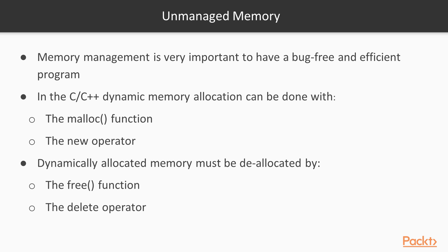Once you allocate the memory, you can work with its content using the dereferencing operator, which is the star symbol. When you are done with the block of memory and no longer need it, you will have to dynamically deallocate it. Deallocation is done by calling the free function if you allocated with malloc, or using the delete operator if you allocated with new. So malloc and free go together, and new and delete go together.